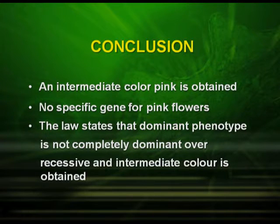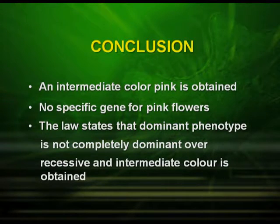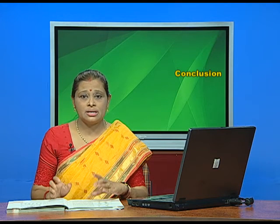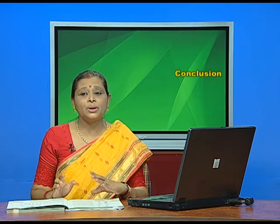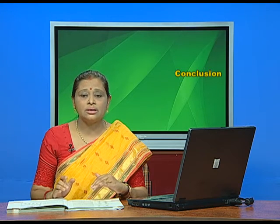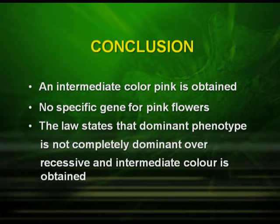Let us conclude: in incomplete dominance, an intermediate color — pink — is obtained. There is no specific gene for pink flowers. The red was dominant and the white was recessive, but the pink color was intermediate between the red and white. The law states that the dominant phenotype is not completely dominant over the recessive, and an intermediate color is obtained.